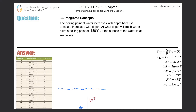Number 65, integrated concepts. The boiling point of water increases with depth because pressure increases with depth. At what depth will fresh water have a boiling point of 150 degrees Celsius if the surface of the water is at sea level? We need to understand the concept connecting vapor pressure, absolute pressure, and boiling point.